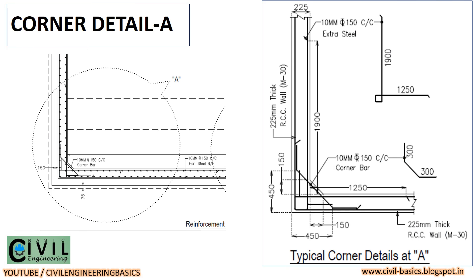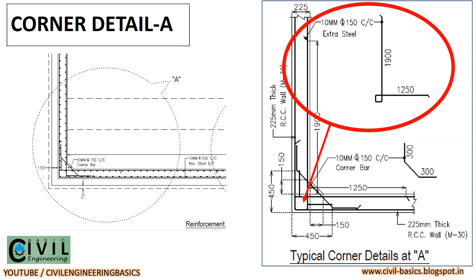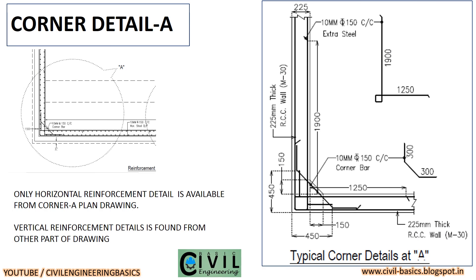Now we will see the extra steel detail. Extra steel is given as 10 mm diameter with 150 mm center to center, with one leg 1,900 mm and the second leg 1,250 mm, with a 90 degree bend as per drawing. As shown in the drawing, the extra steel is placed on the inner side of the wall. We have obtained only horizontal reinforcement details from the Plan A Corner detail drawing — all horizontal reinforcement, extra bars, corner bars, and main bar details are available. For vertical reinforcement detail we have to read another part of the drawing.